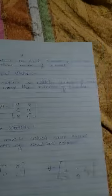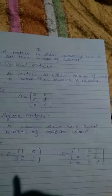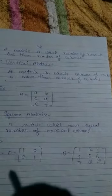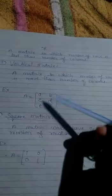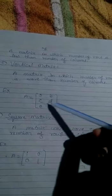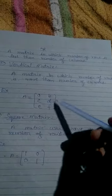Fourth, vertical matrix. A matrix in which number of rows is more than number of columns, means number of rows is greater than number of columns.